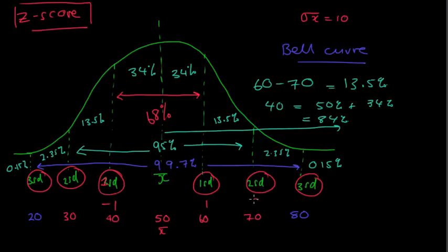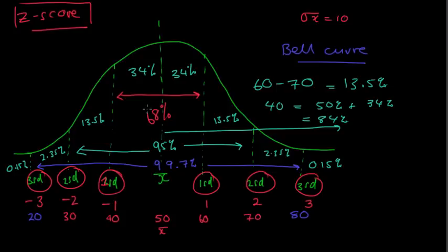If you have a Z score of 2, then you have two standard deviations above the mean. If you have a Z score of 3, you have three standard deviations above. A Z score of negative 2 means two standard deviations below, and negative 3 means three standard deviations below the mean. I know it's a little bit hard to take in to start off with, but believe me, it gets easier — we'll get a few questions now to help out.